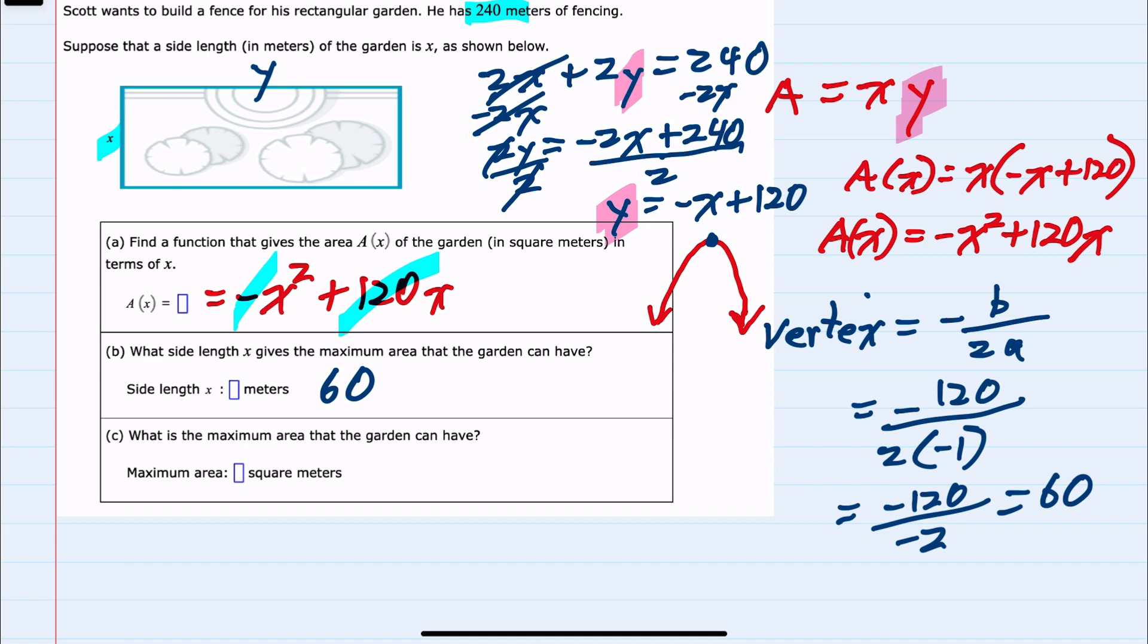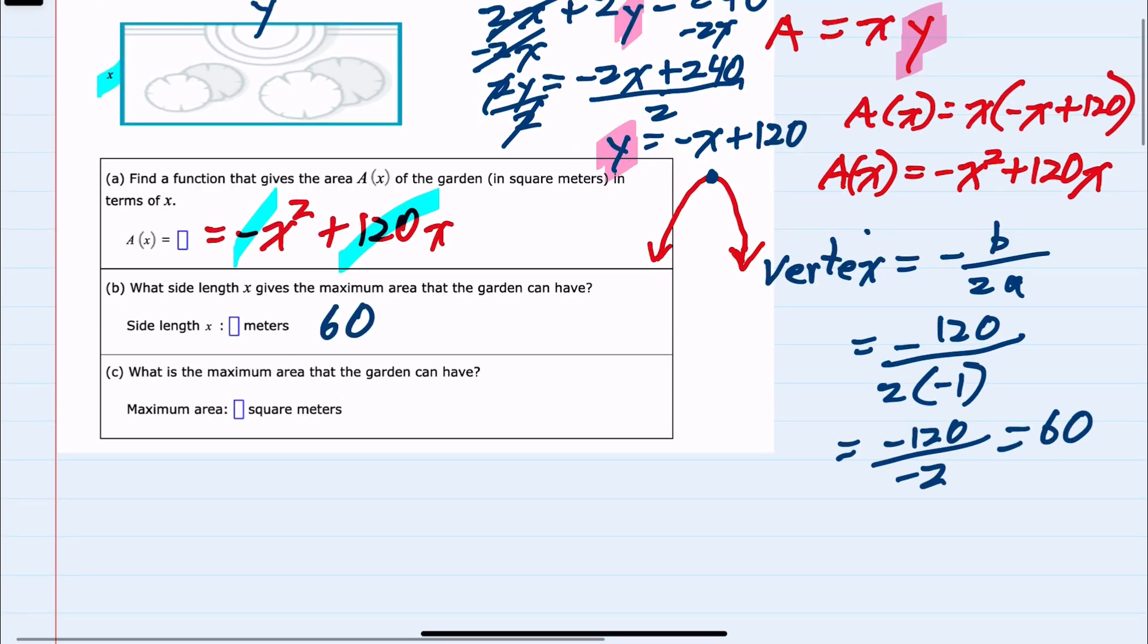And then the last question is what is that maximum area? We would substitute back into our area function, the location where we know that the maximum happens, so a of 60 equals, now replacing the x's with 60's, negative 60 squared, notice it's only the x being squared, not the negative, plus 120 times x, which is 60.